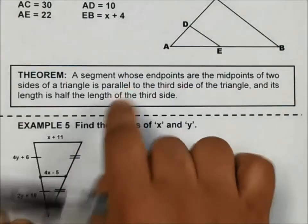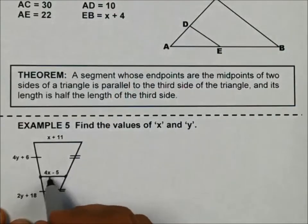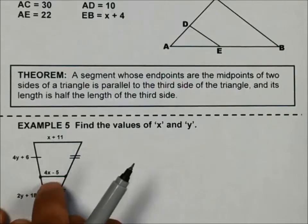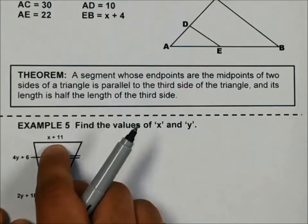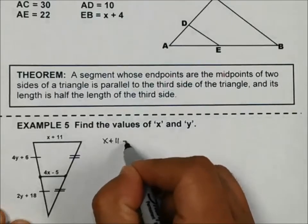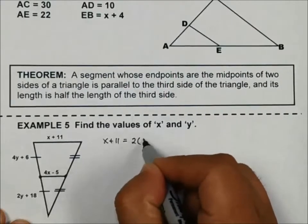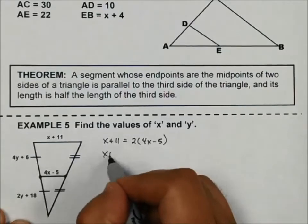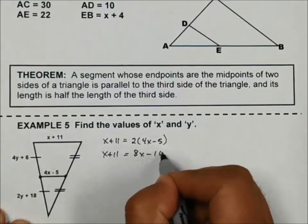So what this theorem states is that this 4X minus 5 is going to be half of the X plus 1. In other words, two of these 4X minus 5s is going to equal one of these X plus 1s. So to solve for X, X plus 1 is going to be equal to 2 of the 4X minus 5s. So we'd have to distribute, X plus 11 is going to be equal to 8X minus 10.